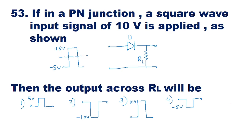In this question, if in a PN junction a square wave input signal of 10 volt is applied as shown, the output across RL will be how much? Analyzing this circuit, there is a diode and an RL resistor. This will be the input of the circuit and this will be the voltage across RL, which is the output of the circuit.